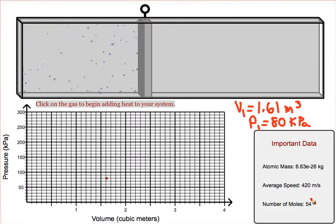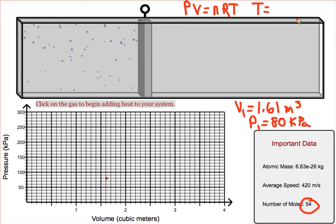We have 54 moles and we use our formula PV equals NRT to find the temperature. Remember to work in pascals and your ideal gas constant is 8.31. This gives us a starting temperature of 287 Kelvin.